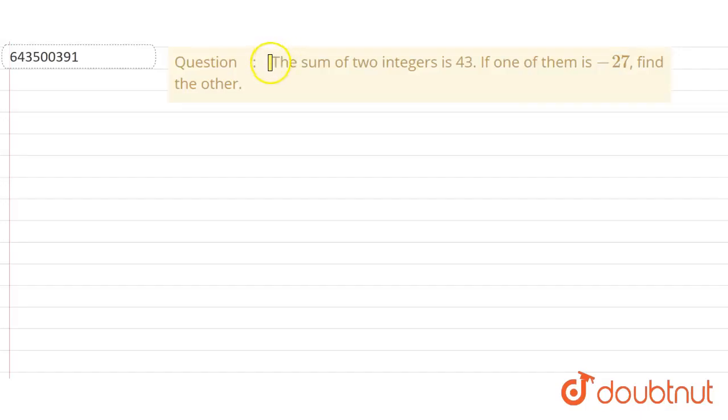The problem states: the sum of two integers is 43. If one of them is minus 27, we have to find out the other one.